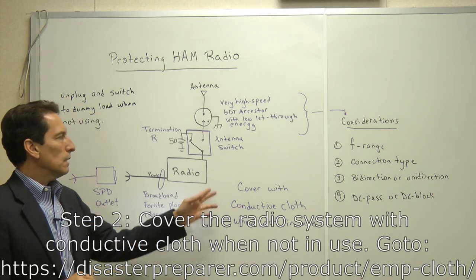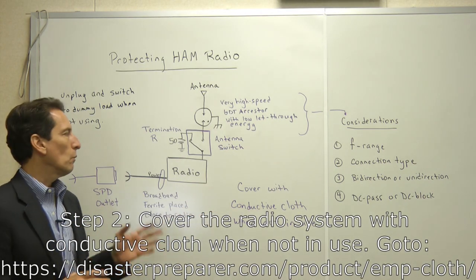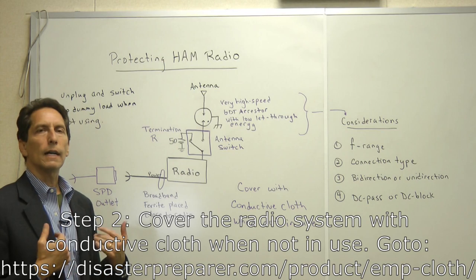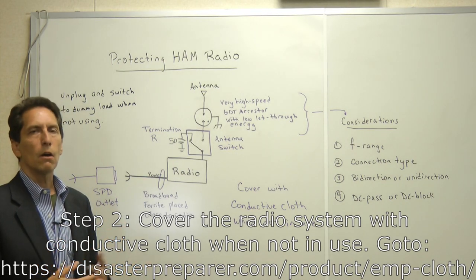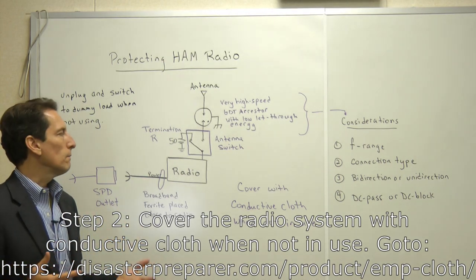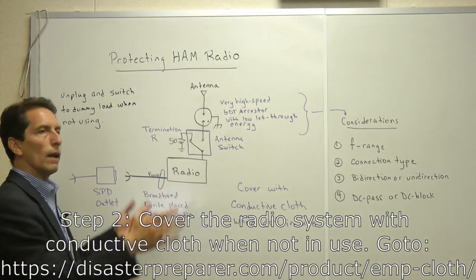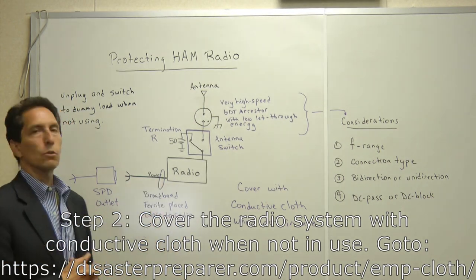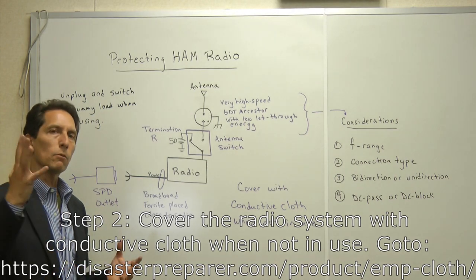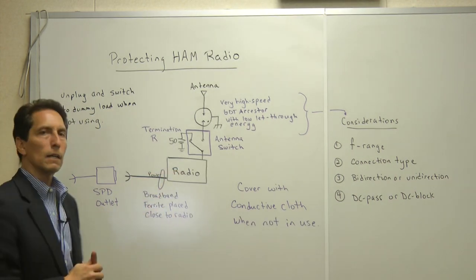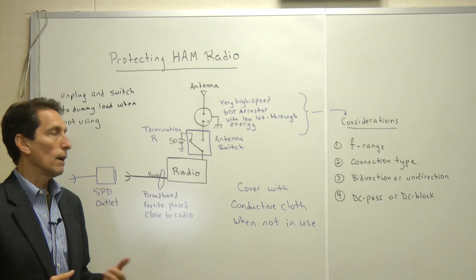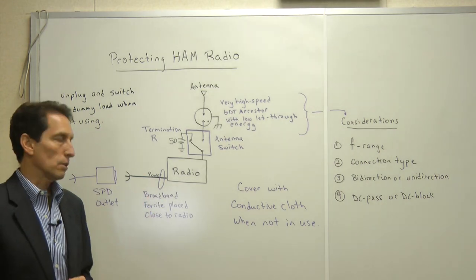So that's the first thing to know is that when you're not using it, get it disconnected from those long wires. The second thing is when you're not using it, cover the radio system with a conductive cloth. Now I sell some EMP cloth is what we call it, but it's just conductive cloth. So get a piece of that conductive cloth and drape it over the radio system when you're not using it. That will help protect from some of the radiated energy that might try and couple into the radio itself. So that's the protections when you're not using it.